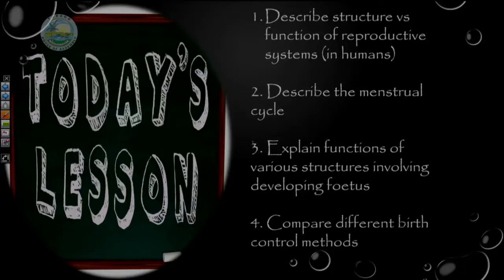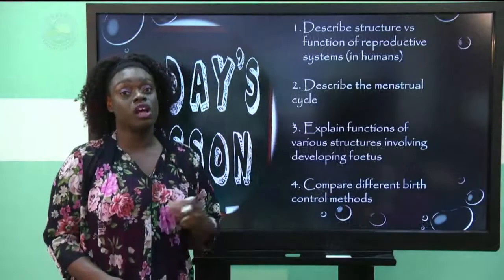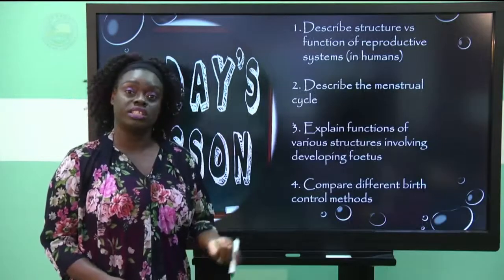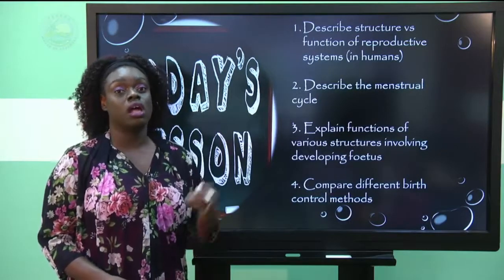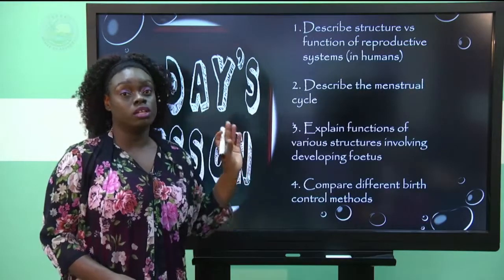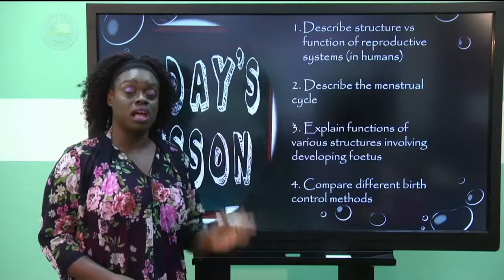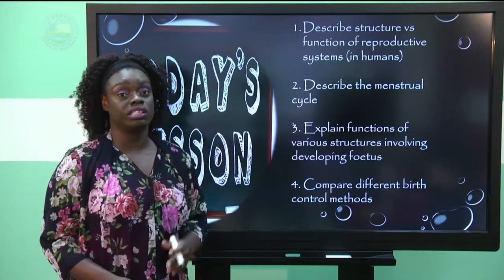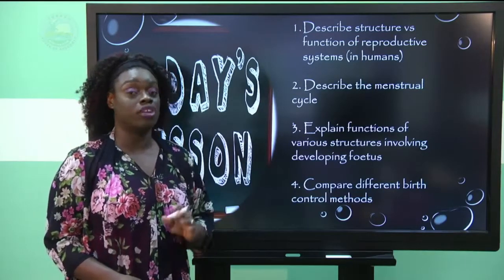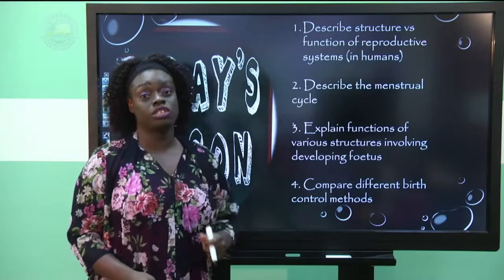The reproductive system in humans is different to all other systems in the body — for example, the digestive system and circulatory system — in that the reproductive system has male and female parts. In all the other systems, they are the same regardless of your sex.